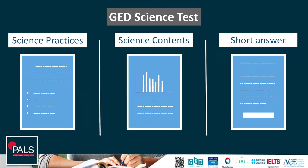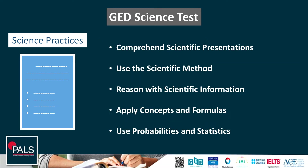You probably know that the GED science test consists of three parts: science practices, science contents, and short answer. Today I will tell you some extra guidance about the GED science test. The first part is science practices.